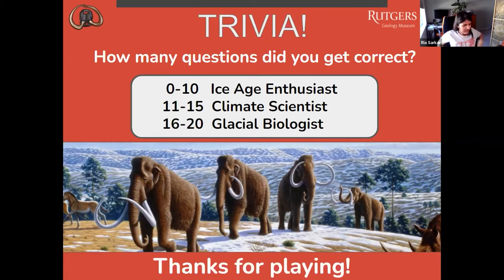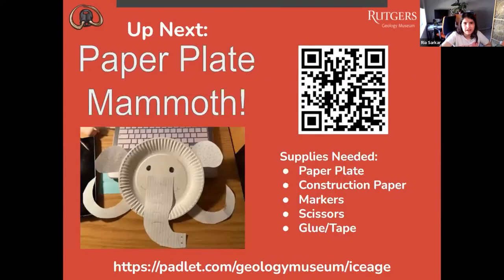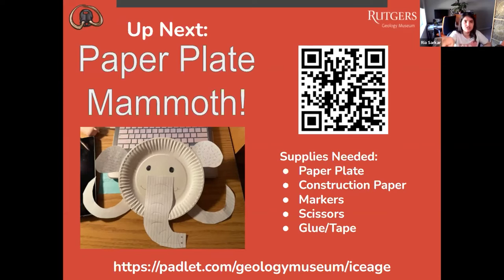We now have a craft activity — I'll show you what to do. We're making a paper plate mammoth. You'll need a paper plate, construction paper, markers — if you don't have construction paper you can use markers to color — a pair of scissors, and some glue or tape. Once you're finished, you can scan the QR code to our Padlet page where you can upload a picture of your mammoth.